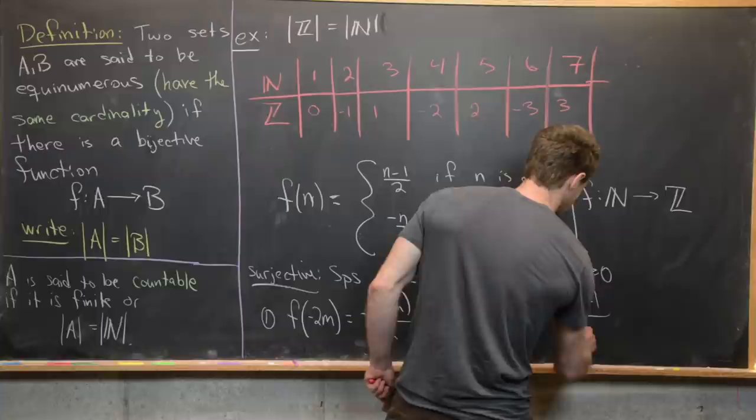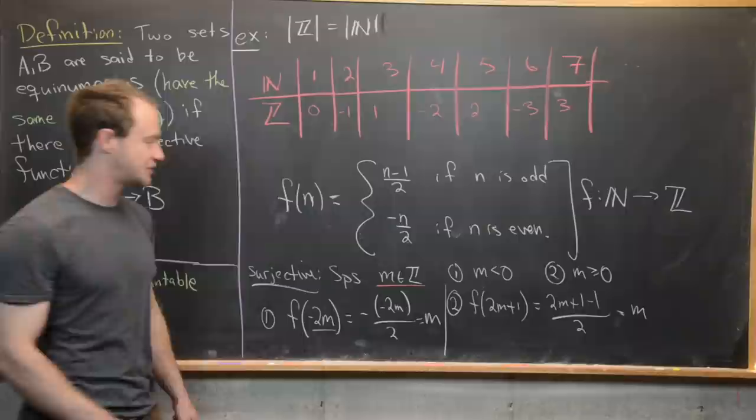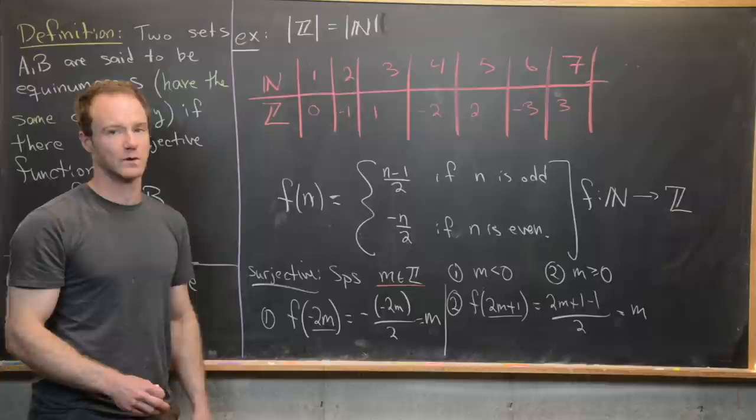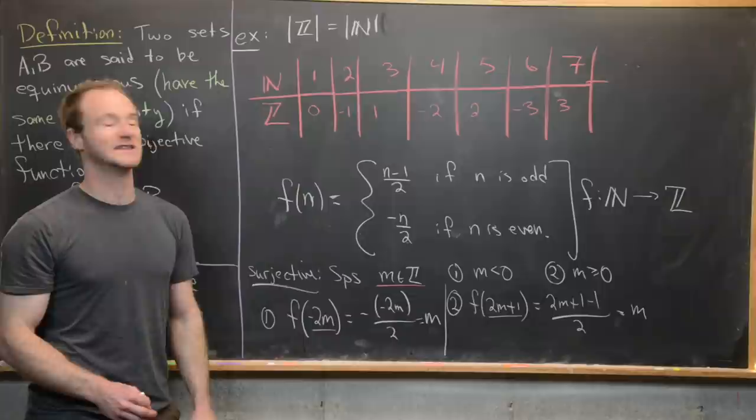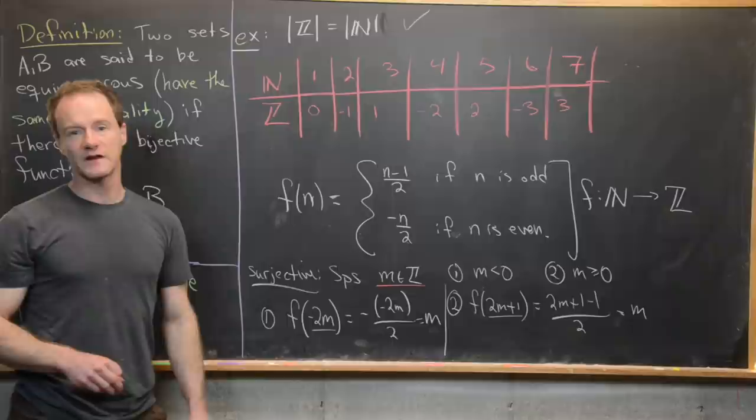For any integer m, we can find a pre-image: if m is negative the pre-image is −2m; if m is non-negative the pre-image is 2m+1. So f is injective and surjective — in other words, bijective. Therefore the integers are equinumerous with the natural numbers, which is exactly what we wanted to show. For our next example, we'll look at equinumerosity between sets of real numbers, specifically finite intervals.